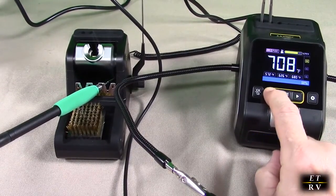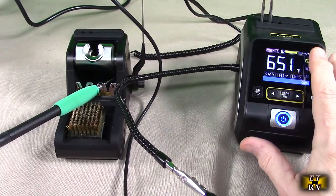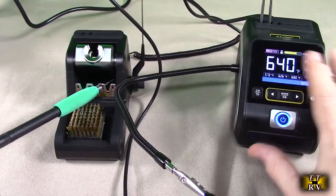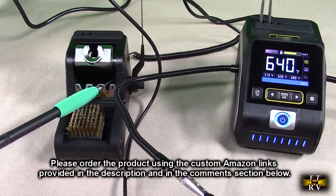Or drop it down to whatever temperature you want. You want to go with the minimal that you could use to melt the solder with the load that you have depending on the circuit board, what you're doing, but that's really easy and accurate to control the actual temperature.